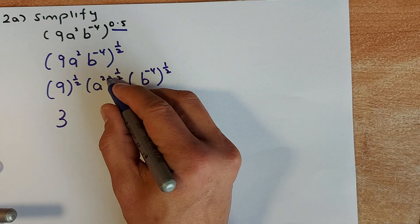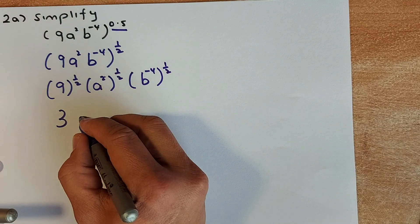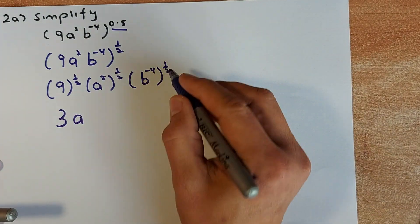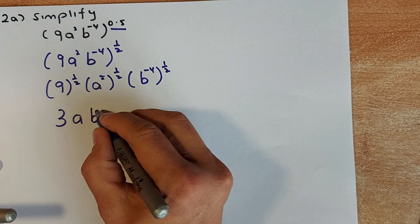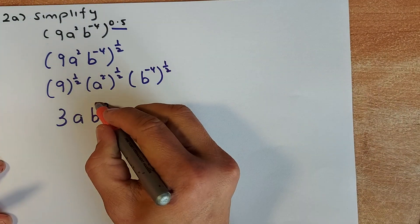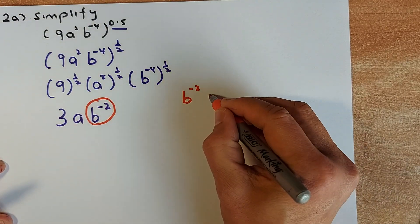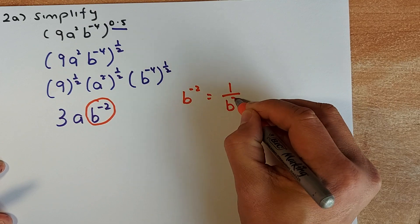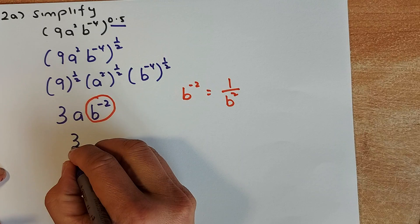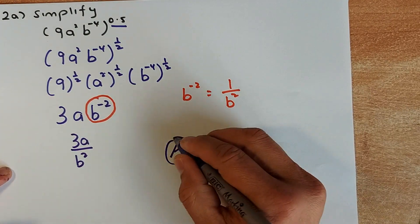For a squared to the half, you multiply the powers together: 2 times one half equals 1, so it's a. For b to the −4 times one half, that gives b to the −2. In indices questions, you cannot leave a negative power in the answer. So b to the −2 is the same as 1 over b squared. The final answer is 3a over b squared. And that will be an achieve.